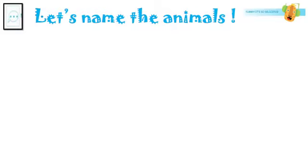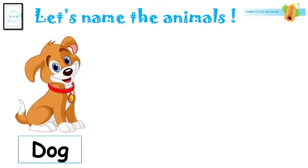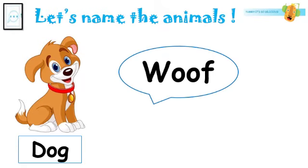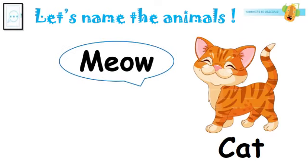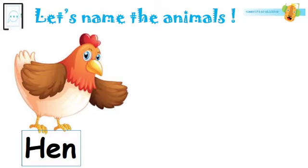Let's name some animals that live in the farm. This is a dog. The dog makes a sound: woof woof. This is a cat. A cat makes the sound meow. This is a hen. The hen makes the sound cluck cluck.